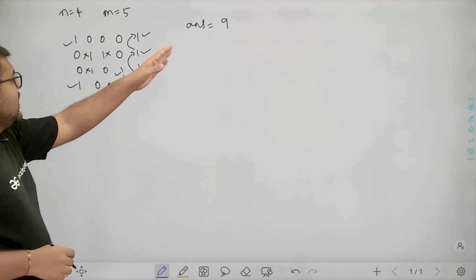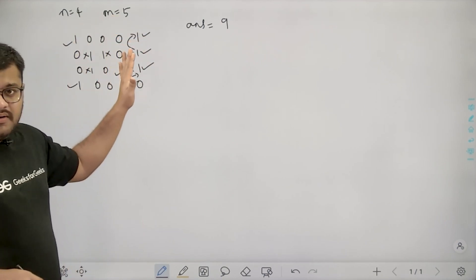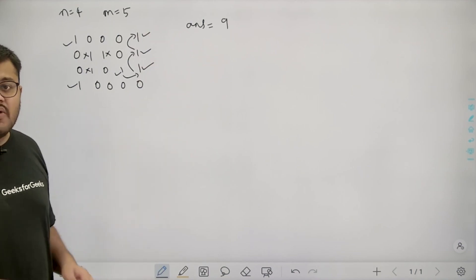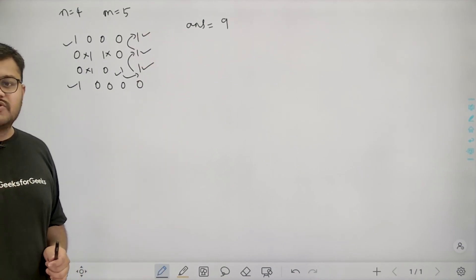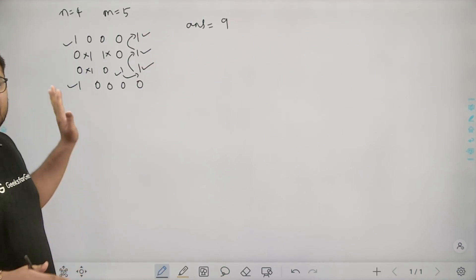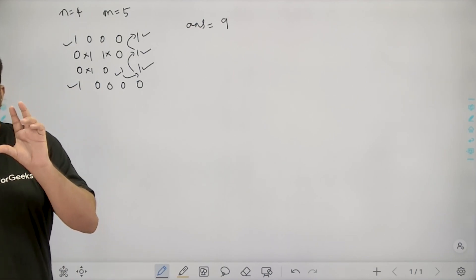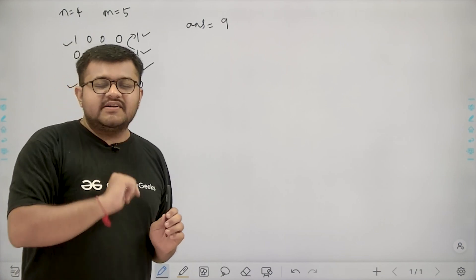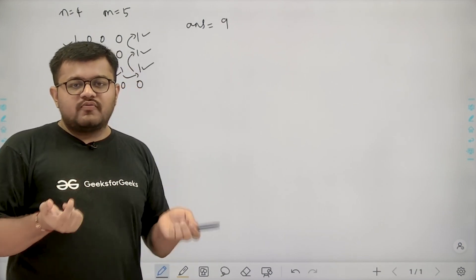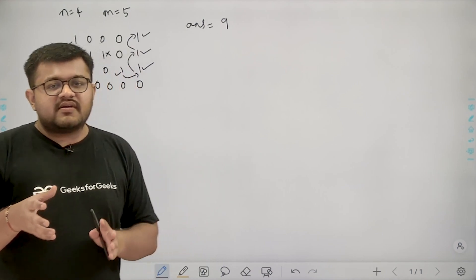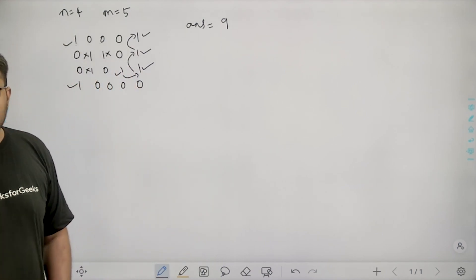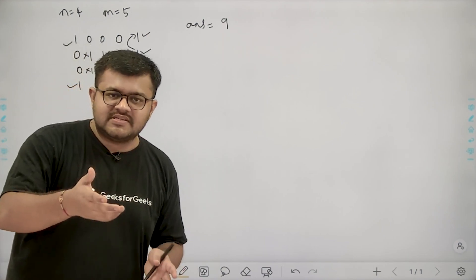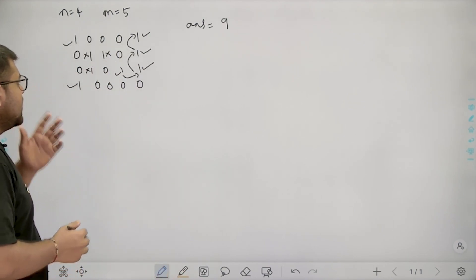We can convert the 2D matrix into a graph. Each cell represents a node and we assume an edge between two cells which are horizontally or vertically adjacent. We only consider cells which have value 1 because cells with value 0 are water/sea cells and we cannot move into them.